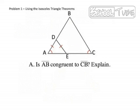So for problem 1, we have two questions that involve using the isosceles triangle theorems. Question A says, is segment AB, which is right here, congruent to segment CB? And then it wants us to explain.